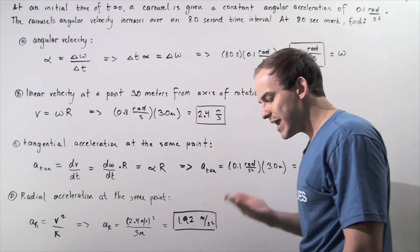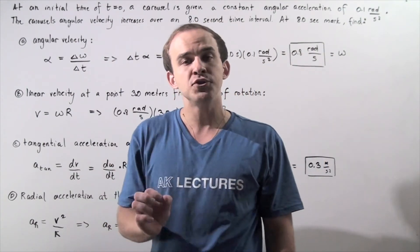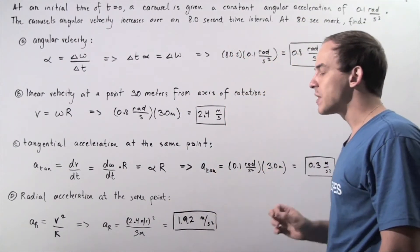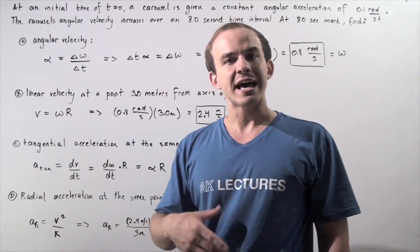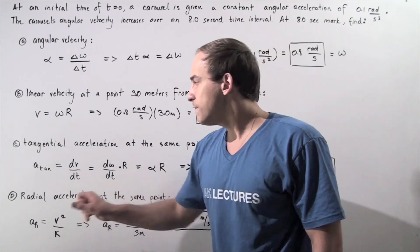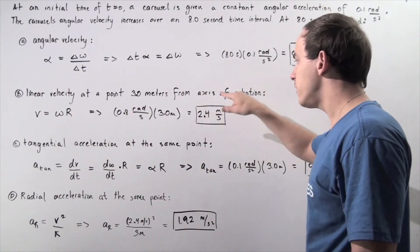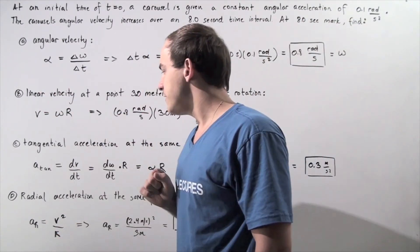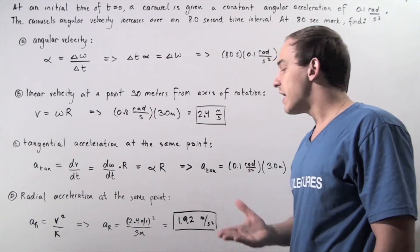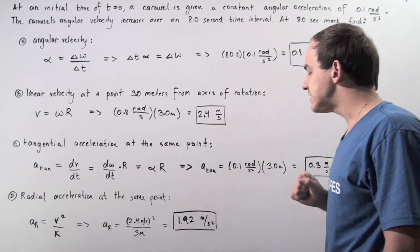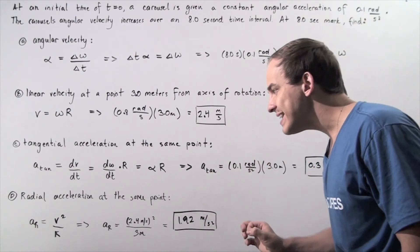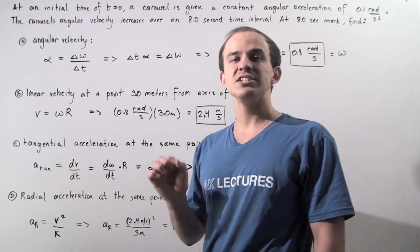Now for part d: what is the radial or centripetal acceleration of an object found 3 meters away from the center of the carousel? Recall the formula for radial acceleration: radial acceleration equals v² divided by r. The velocity from part b is 2.4 meters per second, and r is 3 meters. So 2.4² divided by 3 gives us 1.92 meters per second squared as the magnitude of our radial acceleration.